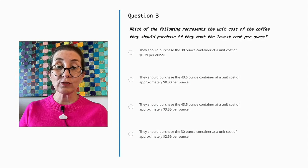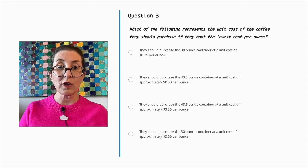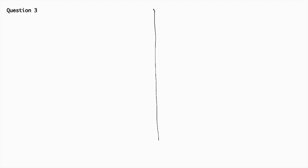To find the best price for Eliza and Lucas, we need to find the cost per ounce for each coffee. Walmart is selling their coffee for $11.70 for 30 ounces. Costco is selling their coffee for $12.99 for 43.5 ounces.